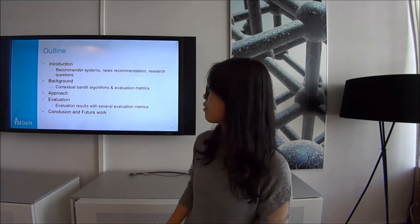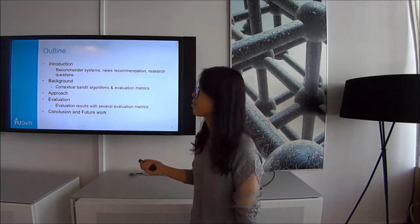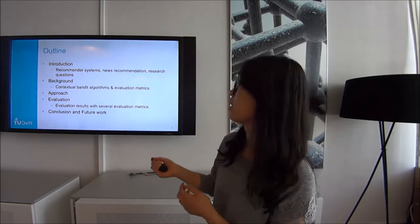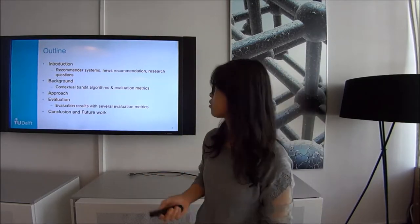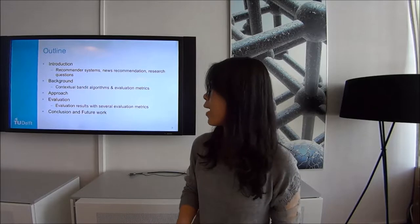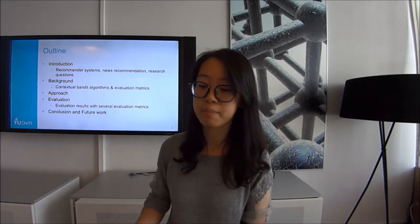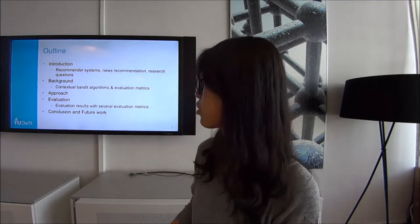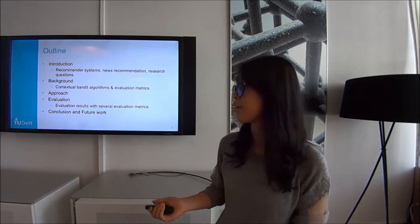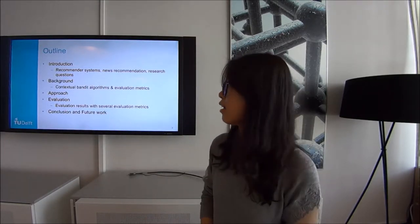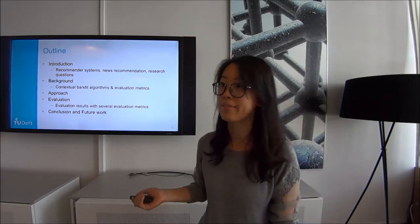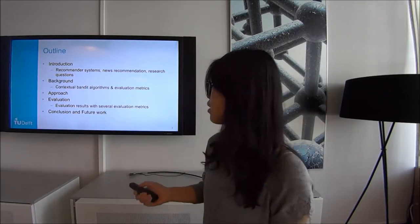The structure of today's presentation is as follows: first, we introduce some background on recommender systems and news recommendation, and propose our research questions. Then we explain contextual bandit algorithms and evaluation metrics used in news recommendation. In the third part, I'll explain the approach used in my thesis, and then show the evaluation results, followed by a conclusion.